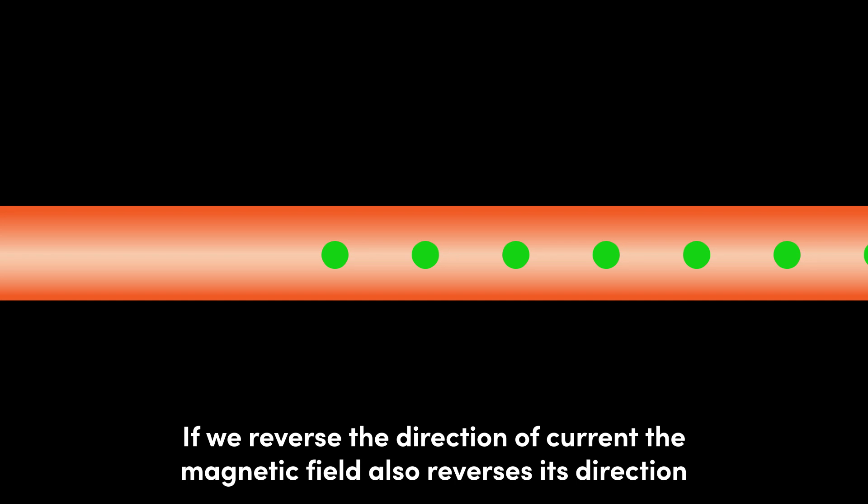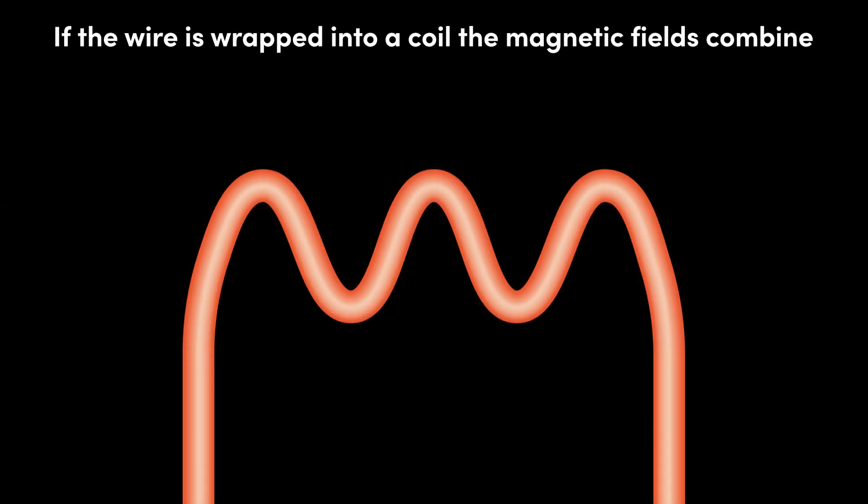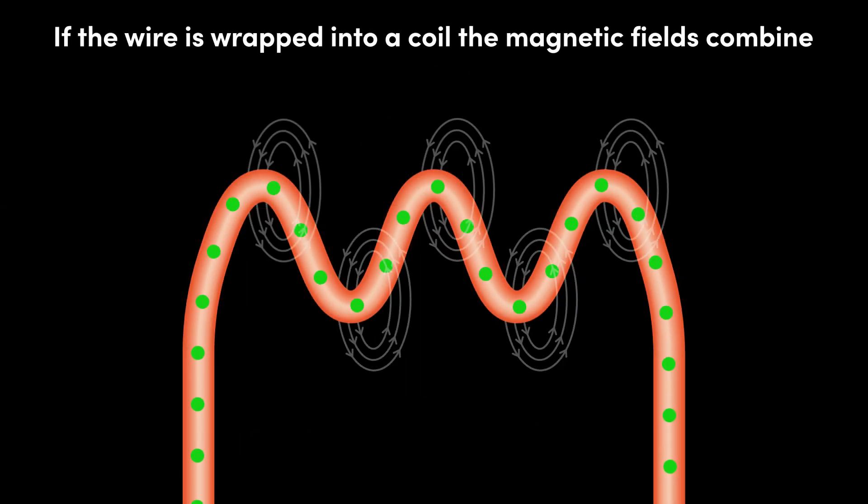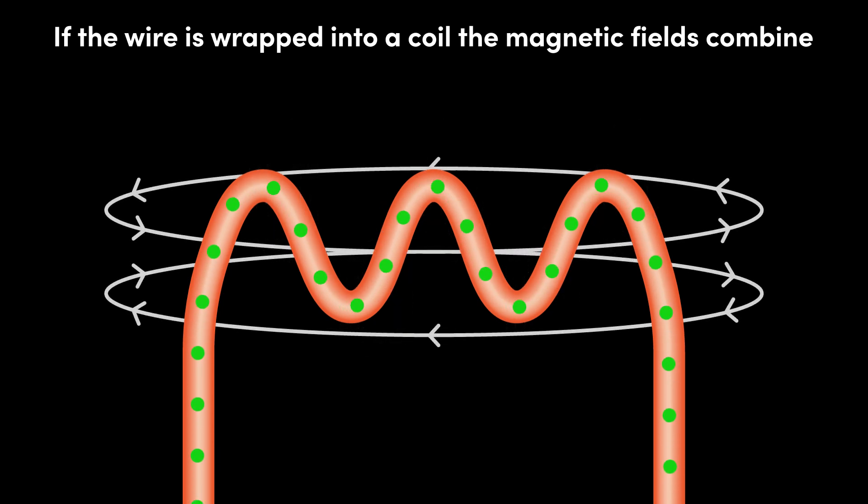If we reverse the direction of current, the magnetic field also reverses its direction. If the wire is wrapped into a coil, each section or turn of the coil produces its own magnetic field, and they combine to produce a larger and stronger magnetic field.